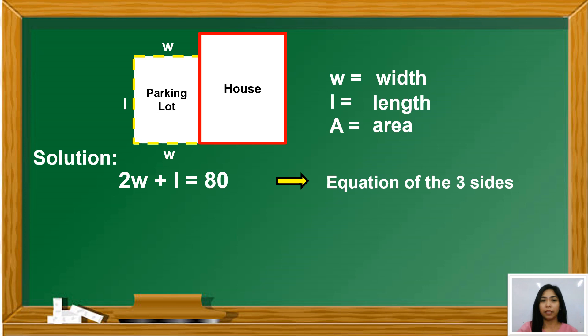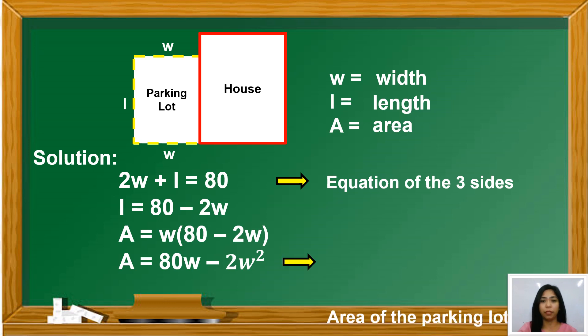How about the length of the rectangle in terms of the width? It gives us L equals 80 minus 2W. Then, we're going to express the area of the parking lot in terms of the width. That is A equals W times 80 minus 2W. So therefore, the area of the parking lot is 80W minus 2W squared. So that is the area of the parking lot.